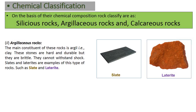Now let's discuss argillaceous rocks, which is the chemical classification of rock. The main constituent of these rocks is argil, that is clay. These stones are hard and durable but they are brittle and cannot withstand shock. Slates and laterites are examples of this type of rocks. You can see the photographs of such rocks here.